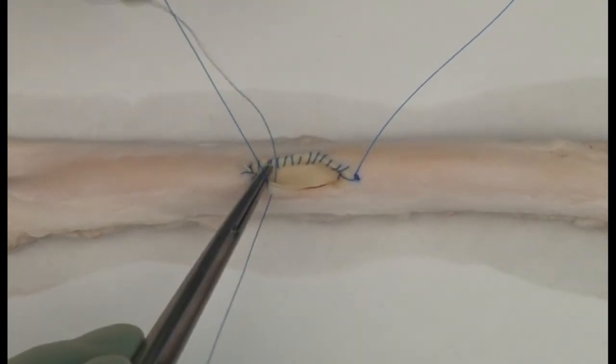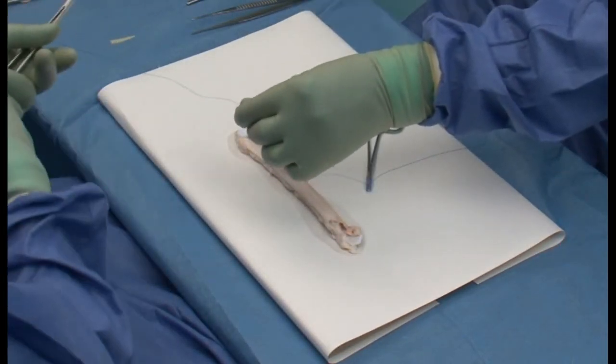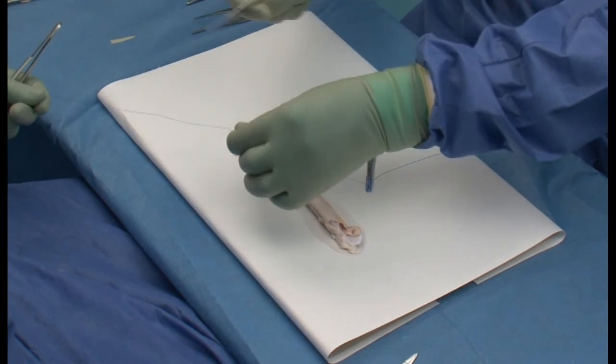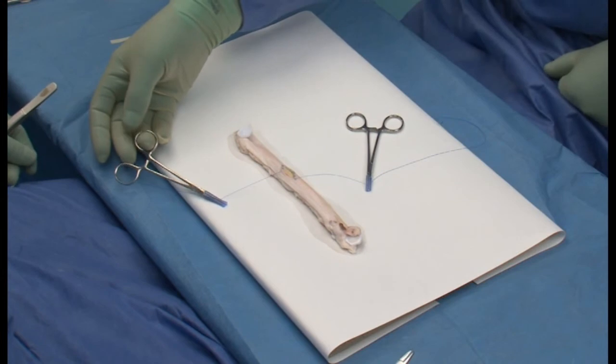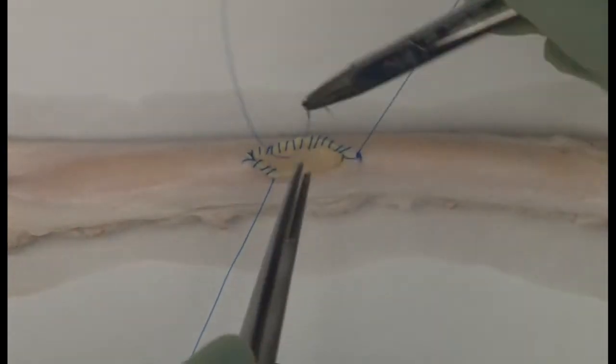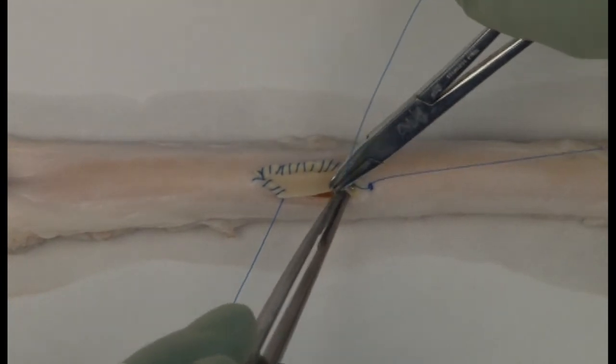Place the suture in a rubber shod hemostat. Now take the other end of the suture and start to suture down the proximal wall, again from outside to inside on the patch and inside to outside on the arterial wall.